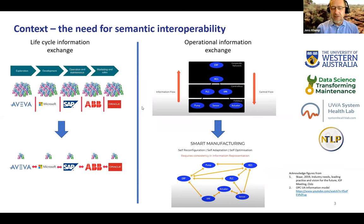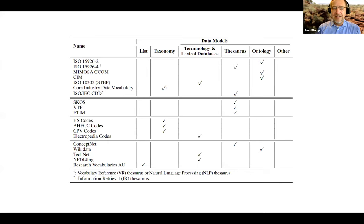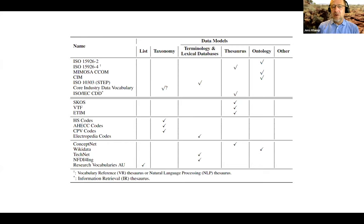If we want to move towards smart manufacturing, we need a much more intelligent way of linking between those systems. Having this as human knowledge and human communications isn't enough — we have to have machine support, and machine support needs semantics. We looked at a long list of standards found through internet and literature research. This table gives an overview of the variety of structures: some are just lists, some are taxonomies, terminology and lexical databases, and ontologies — representing different levels of structural maturity.